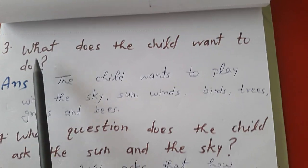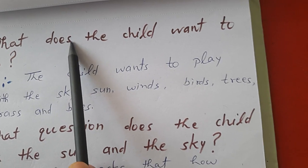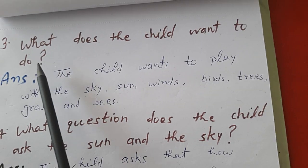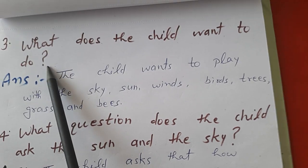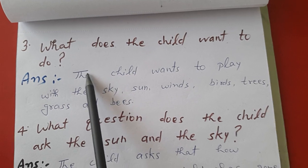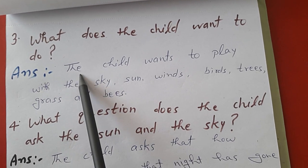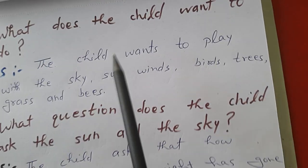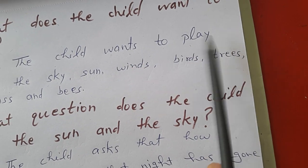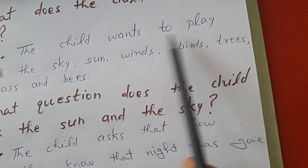Question number three: What does the child want to do in the poem? Poem mein bacha kya karna chahata hai? The child wants to play — bacha khailna chahata hai. Wants means chahata hai, play means khailna.